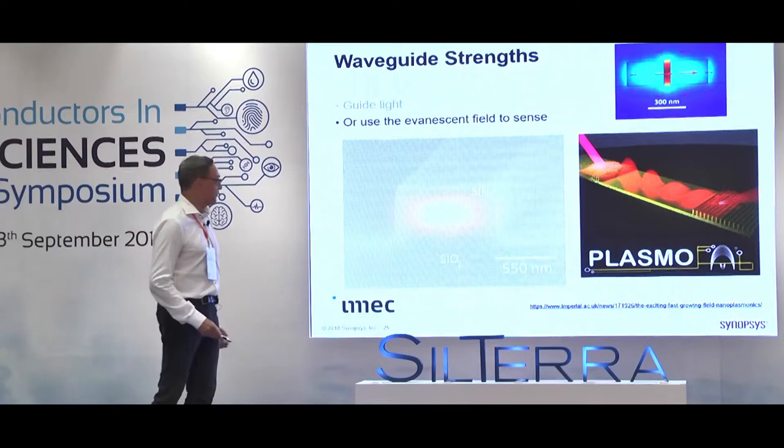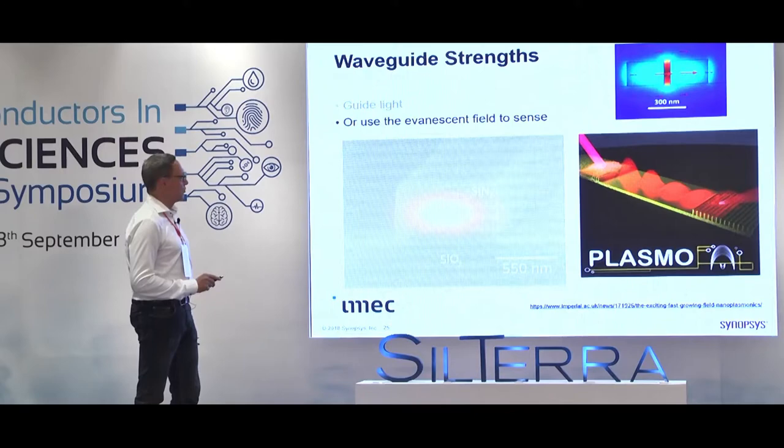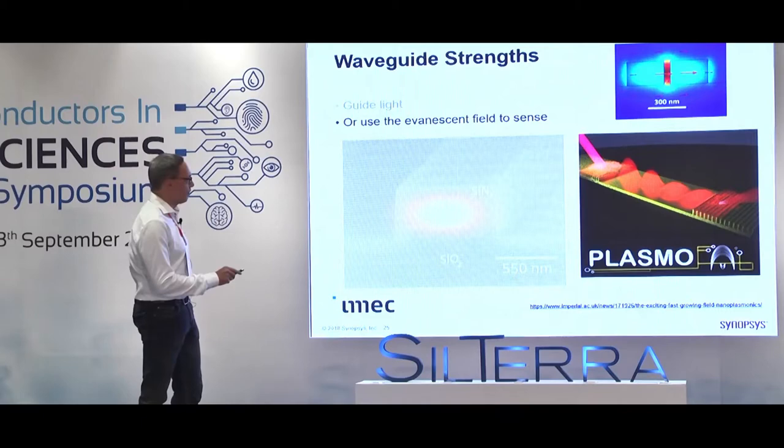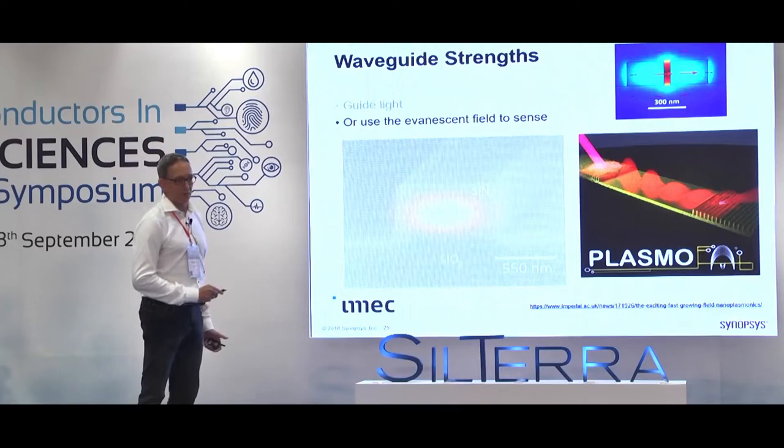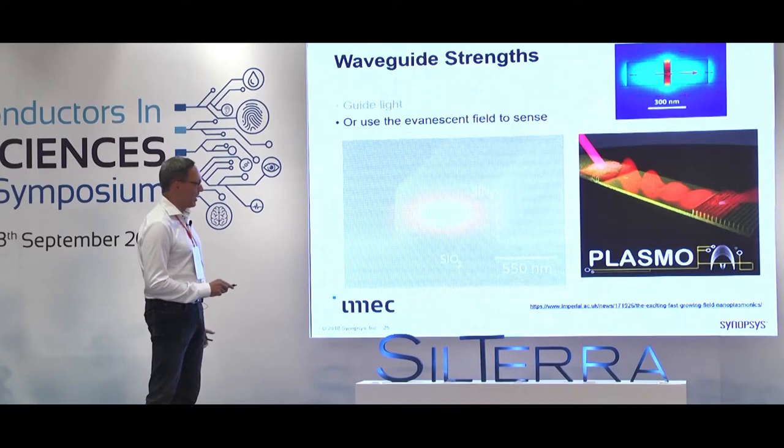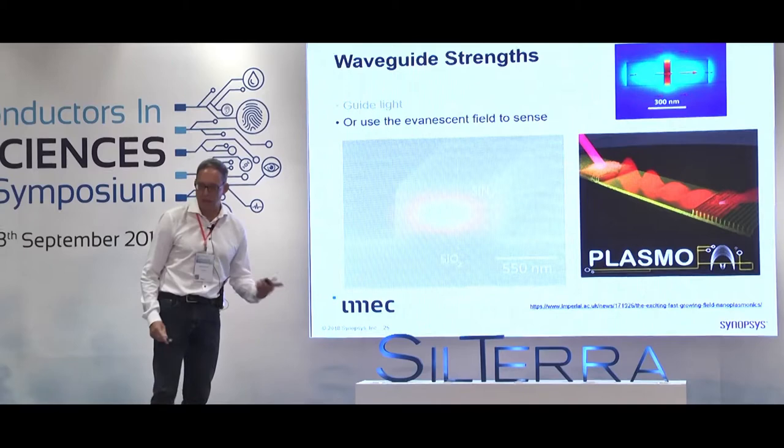Here I show two setups for achieving the evanescent field. You can make a slot waveguide by having two waveguides close to each other and confining the field between them. Or you can use surface plasmons: by applying metals, it's possible to guide light on the surface of the metal while most of the light extends into the liquid you want to analyze.